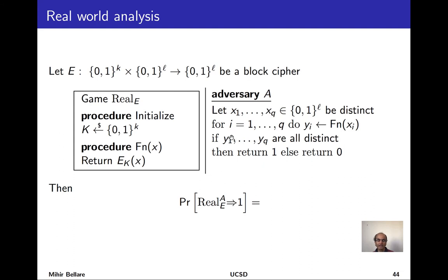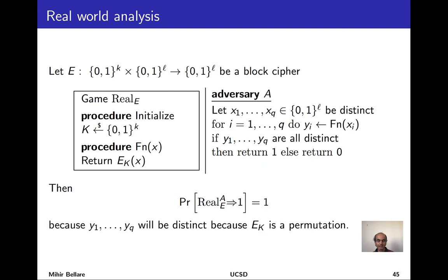Once we have a fixed adversary, we figure out the probabilities it outputs 1 in the real world and then in the random world. Our block cipher is fixed and hence so is the game. In the real world, a key is picked at random and the oracle returns the block cipher under key K applied to each input. The adversary returns 1 when all replies from the oracle are distinct. Since we're getting replies from a block cipher with a fixed key — a permutation — for sure distinct inputs X1 through XQ yield distinct outputs, regardless of the key choice. So the probability of returning 1 in the real world is exactly 1.